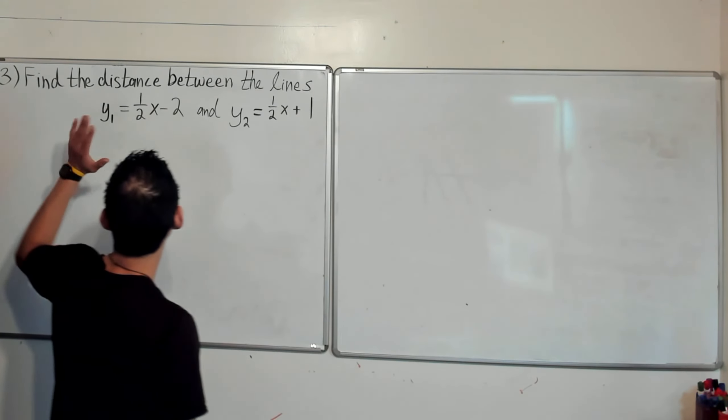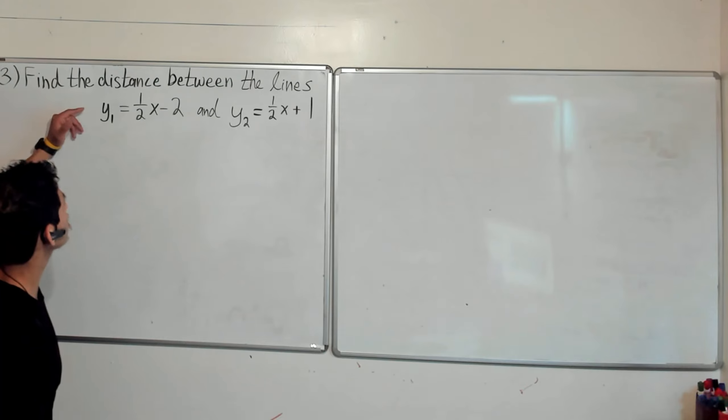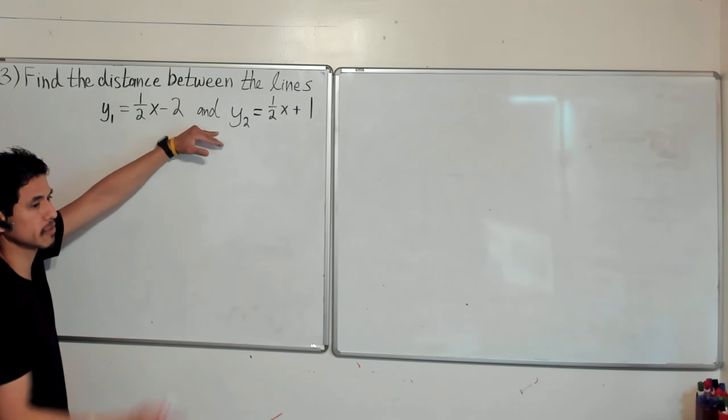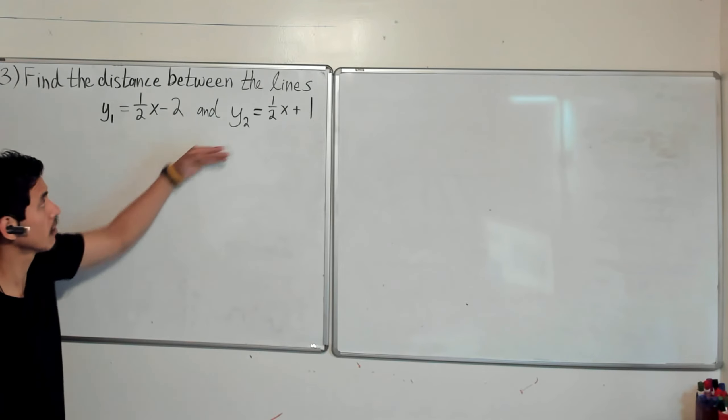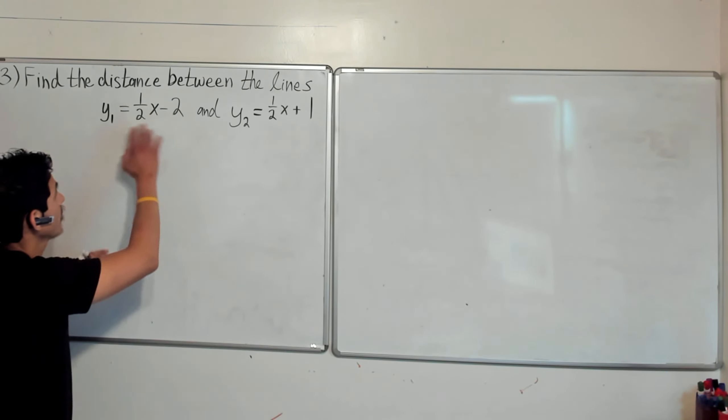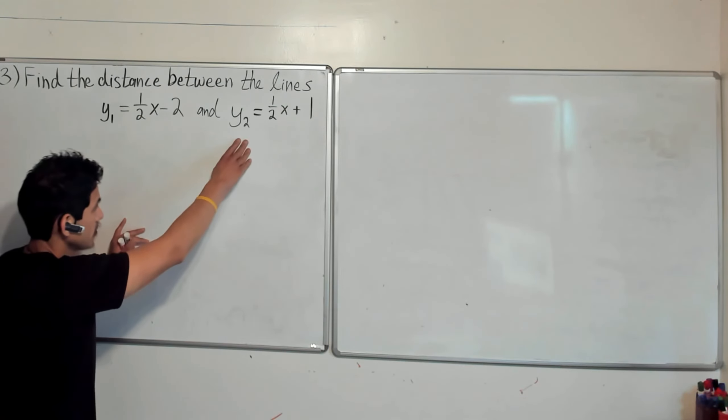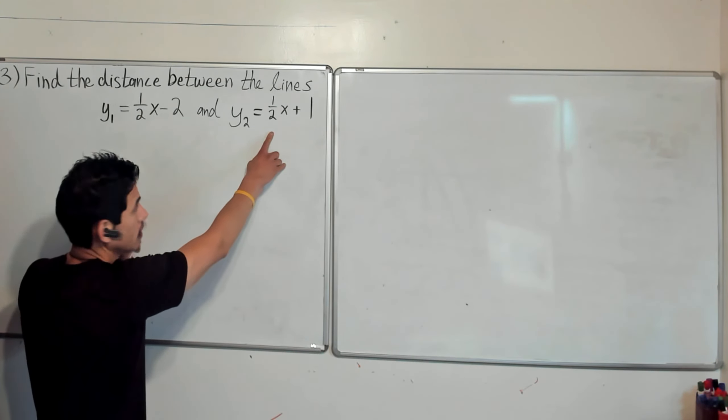All right. So now, as promised, we're going to do some more math. In this case, we're going to look at how we find the distance between two lines that are parallel. So here we have the lines y1 = 1/2x - 2 and y2 = 1/2x + 1.